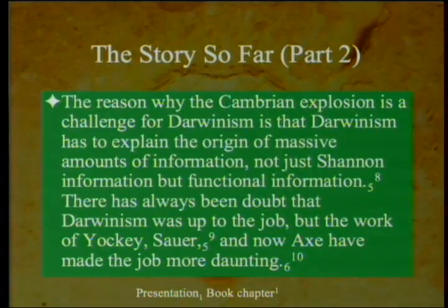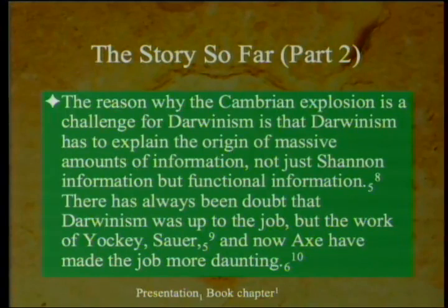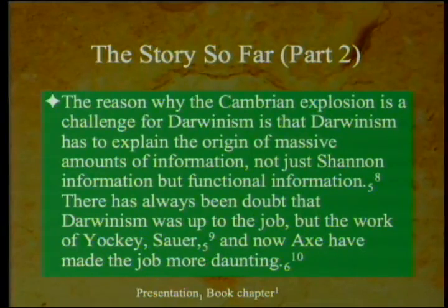All of those statements have a huge amount of research and references behind them. The reason why the Cambrian Explosion is a challenge for Darwinism is that Darwinism has to explain the origin of massive amounts of information — not just Shannon information, but functional information. Information that will actually tell proteins exactly, or at least within the limits of error, what sequence has to be there so as to create an enzyme that will do a particular job.